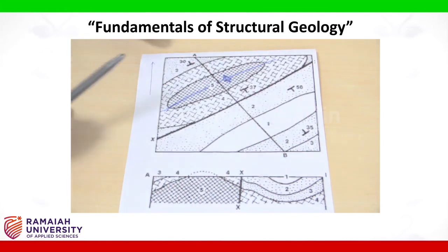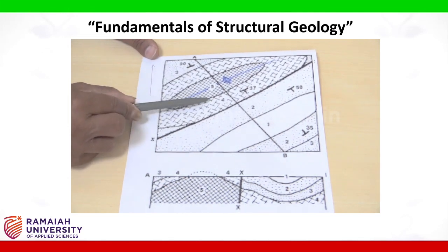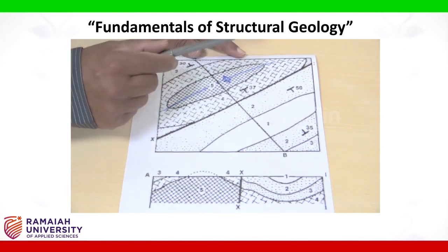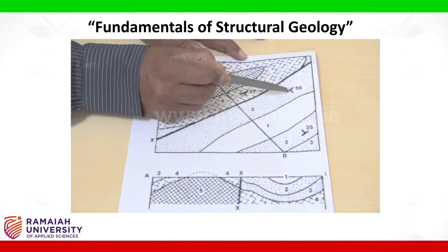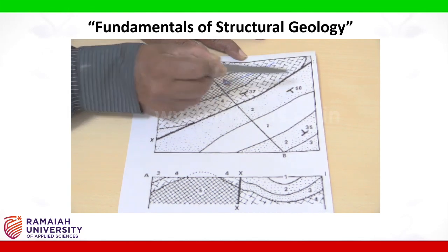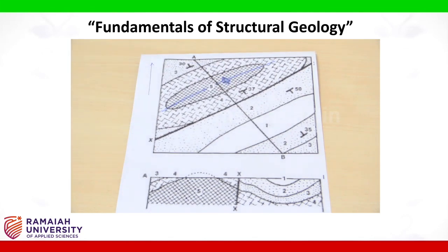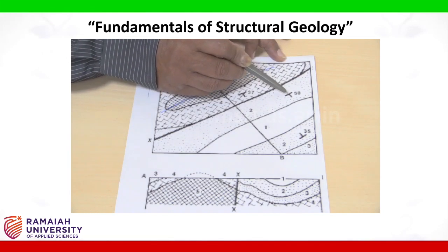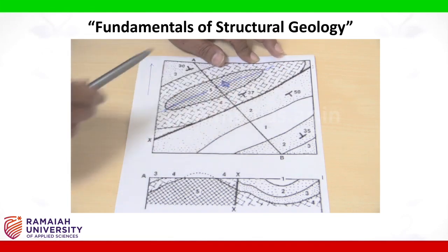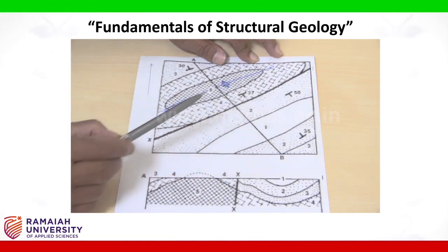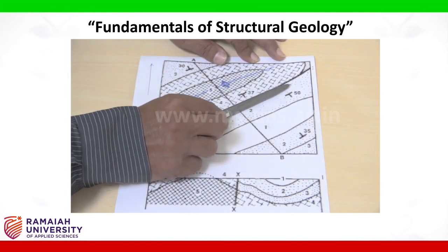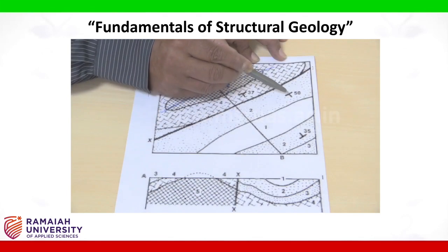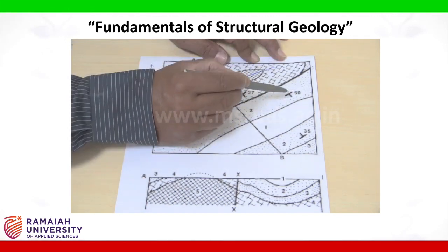There are many features shown on the map. Different rock types are represented by different symbols or hatches. There are certain markings on individual beds: one is a slightly longer line, and another is a shorter segment perpendicular to it. This represents the strike and dip of the individual rock types. The longer segment is the strike, and the shorter segment perpendicular to it is the dip, with direction and amount. Here, one particular bed is aligned in the northeast–southwest direction, with the dip direction towards southeast with an inclination of 50 degrees.